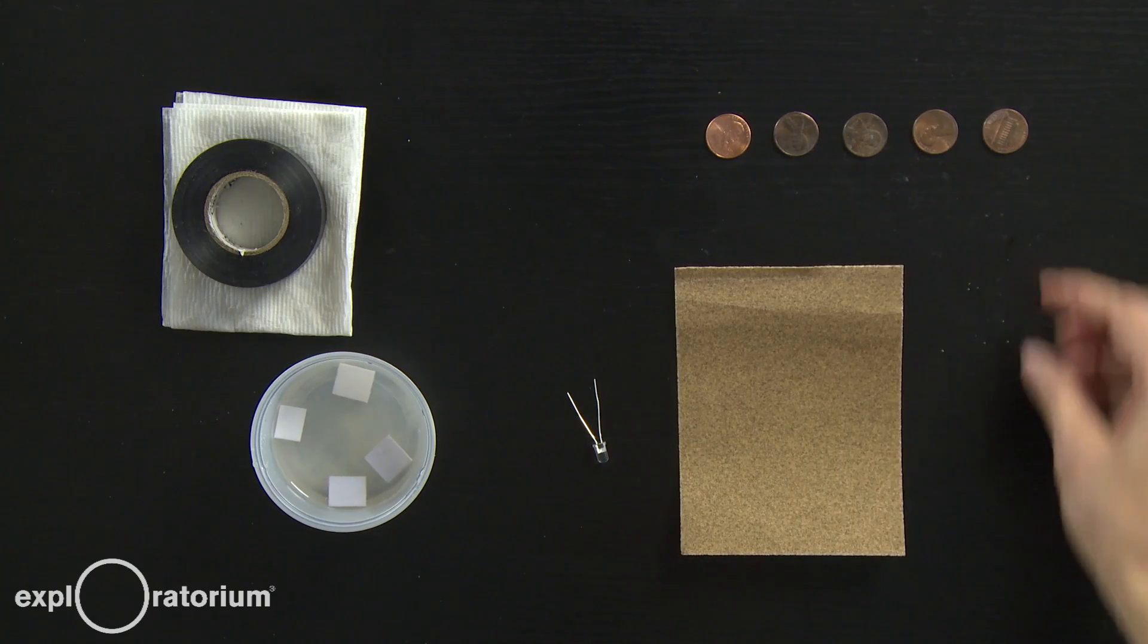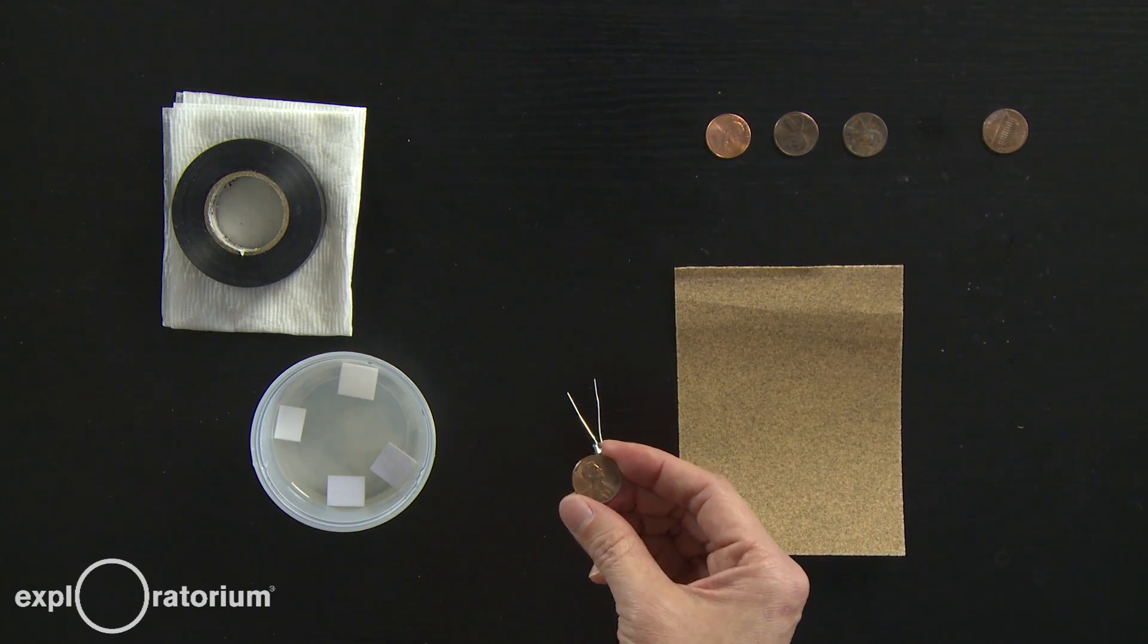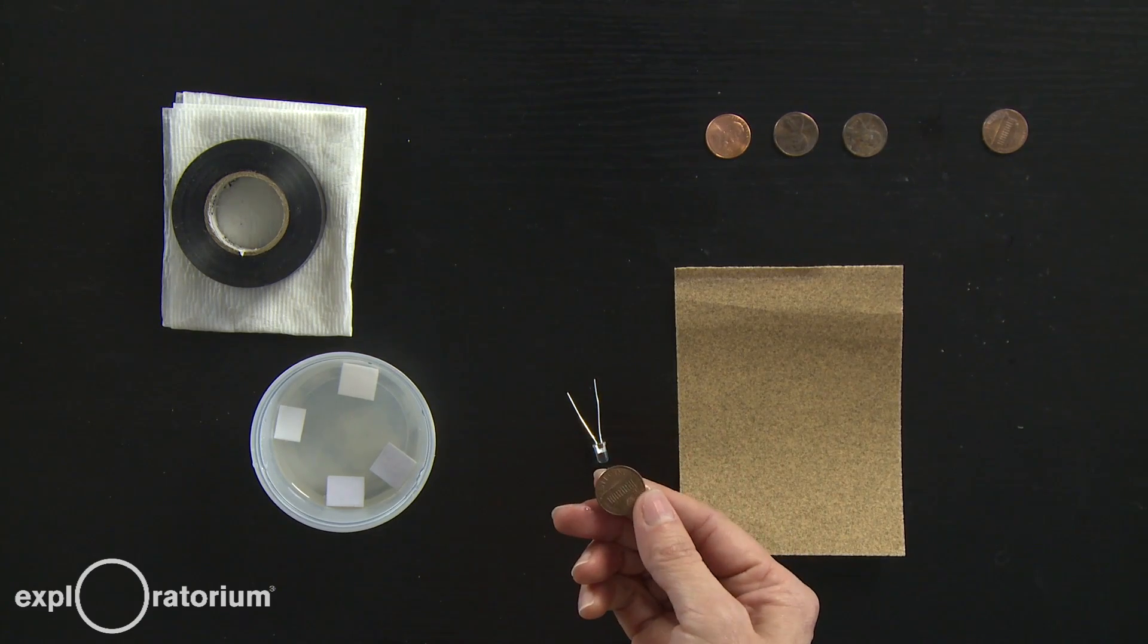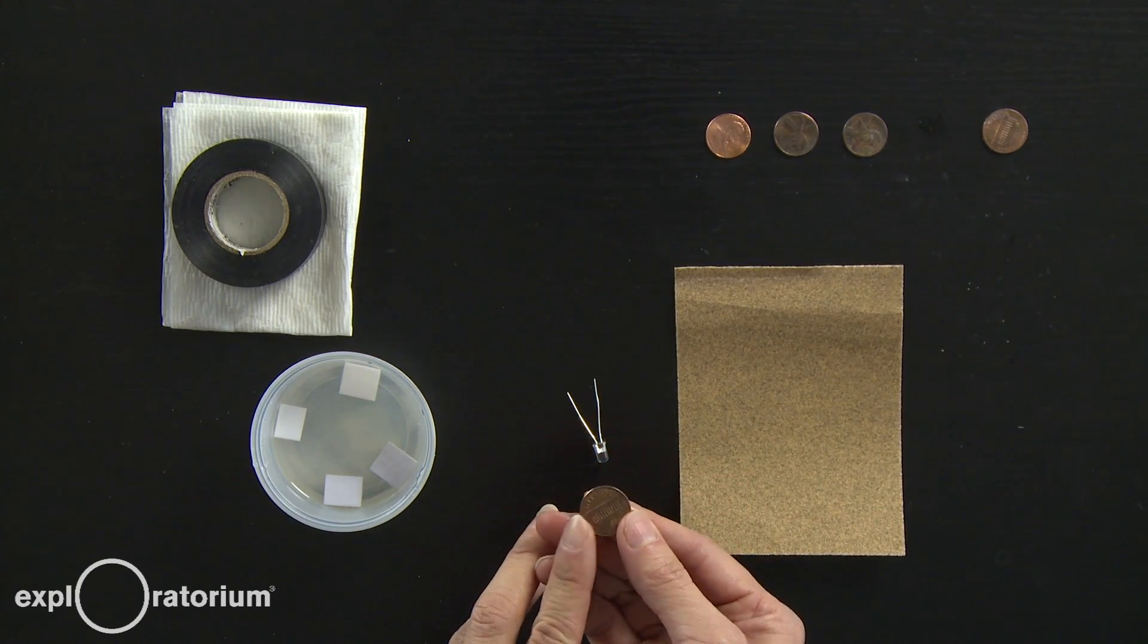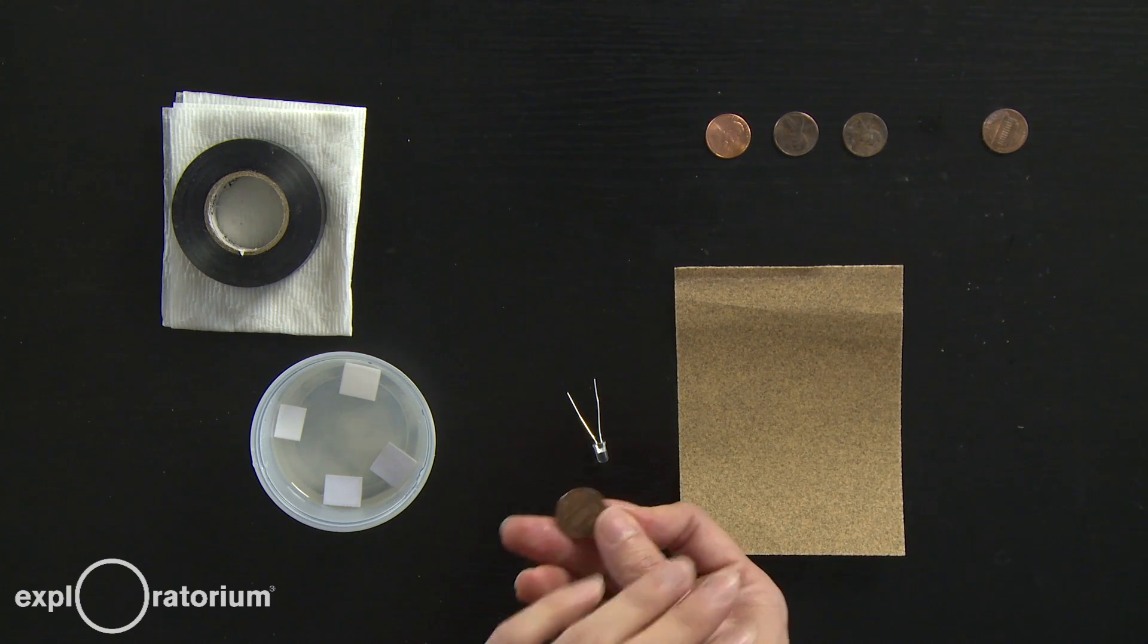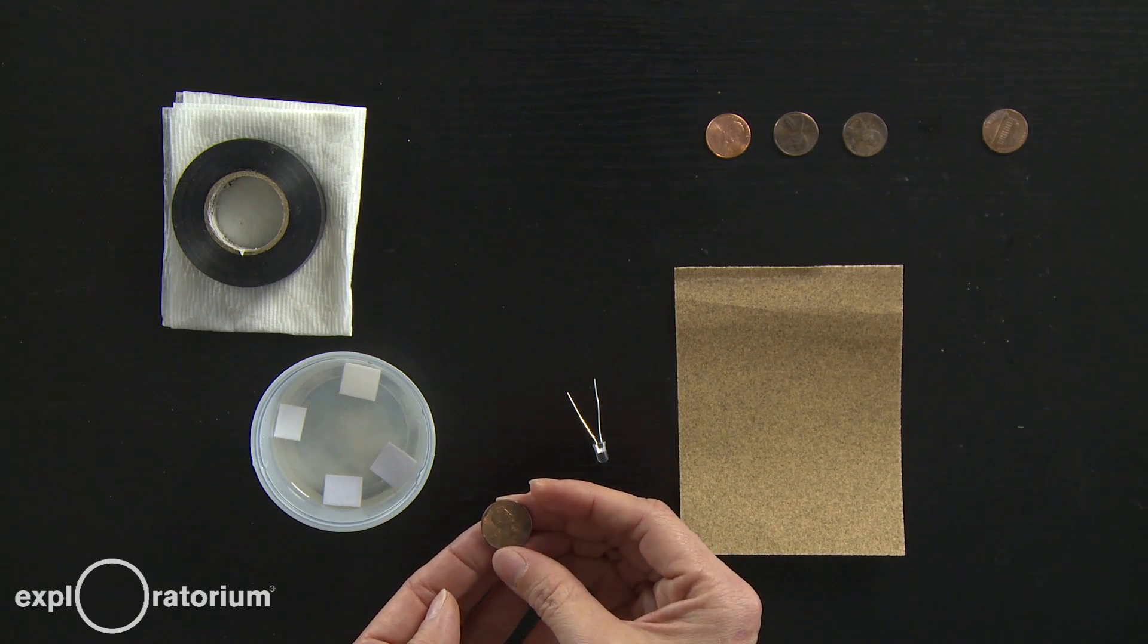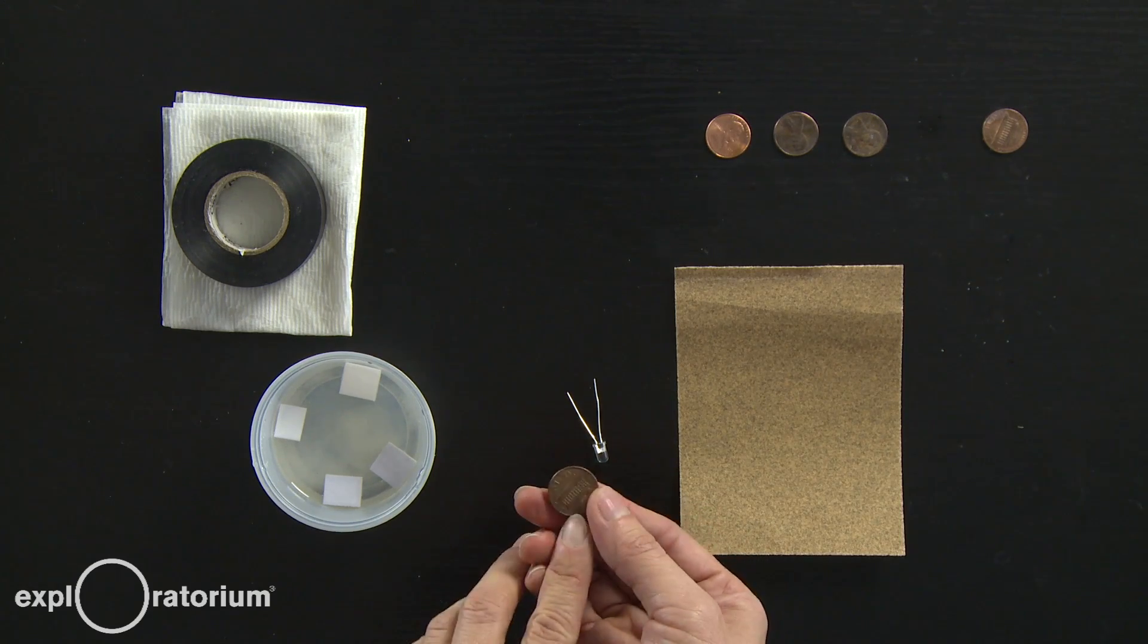The two different kinds of metal are going to come from pennies made after 1982. Before 1982, pennies were mostly copper. And after 1982, the mint changed the recipe so that the centers were made of zinc and there was only a copper coating on the outside. We're going to expose that zinc center by sanding off one face of the penny.